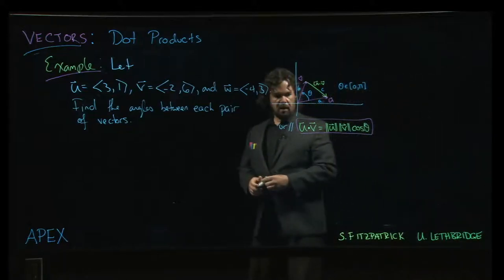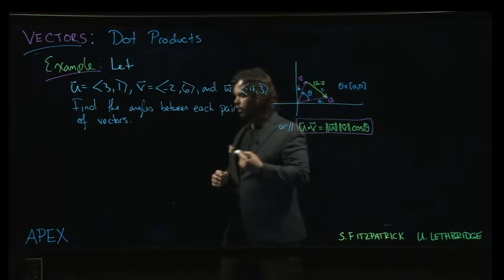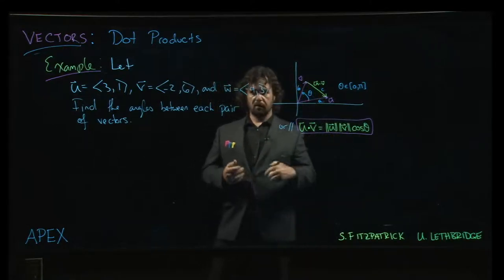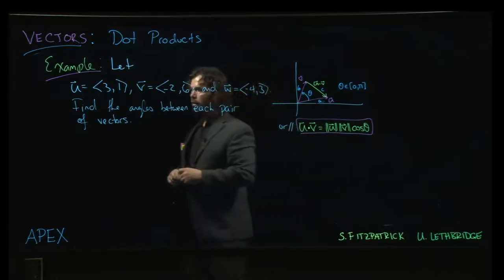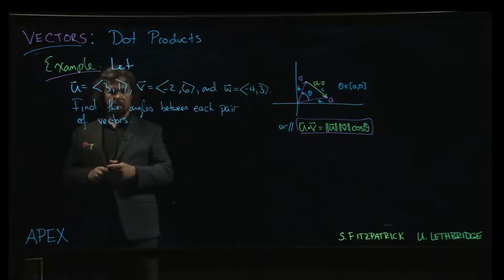Alright, so next we're going to take this formula that we've worked so hard to prove here, giving this geometric interpretation of the dot product, and we're going to put it to use finding some angles between pairs of vectors.